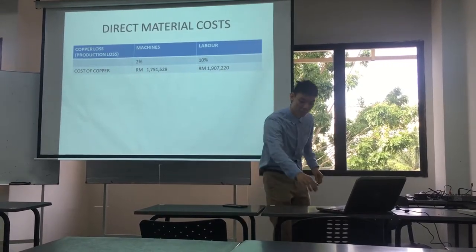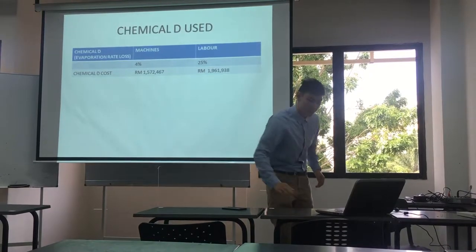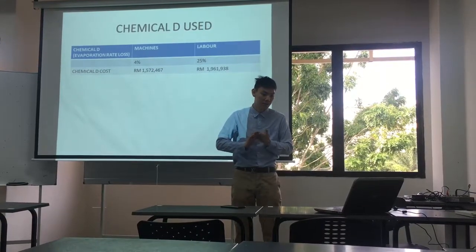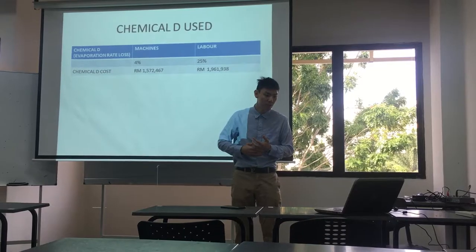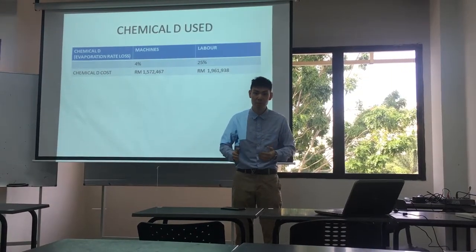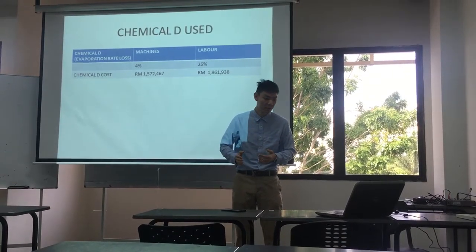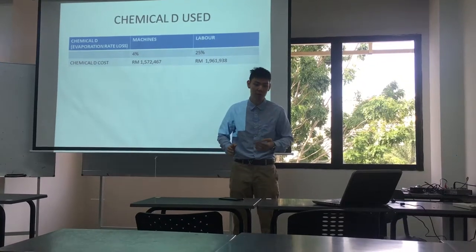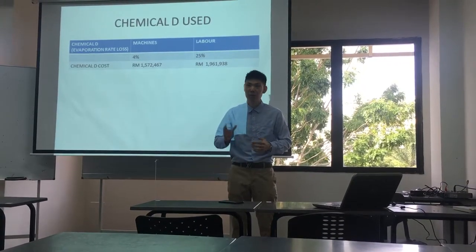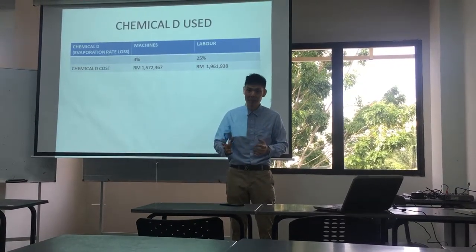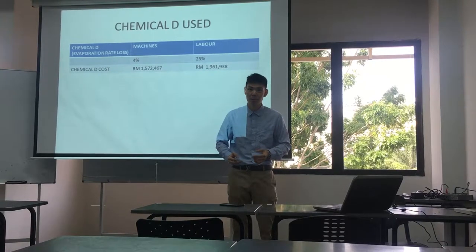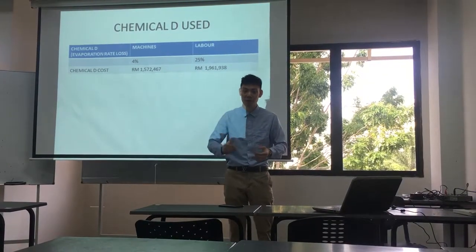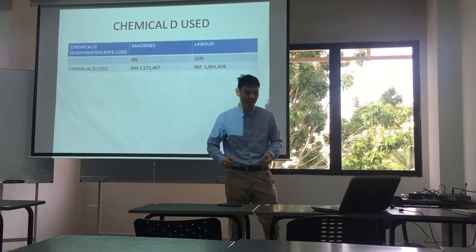The same goes for the chemical used in machines as well. It is able to reduce the evaporation rate loss, as it only evaporates by 4% in machine use. But when labour is used instead, it tends to have a bigger evaporation rate loss of 25%.